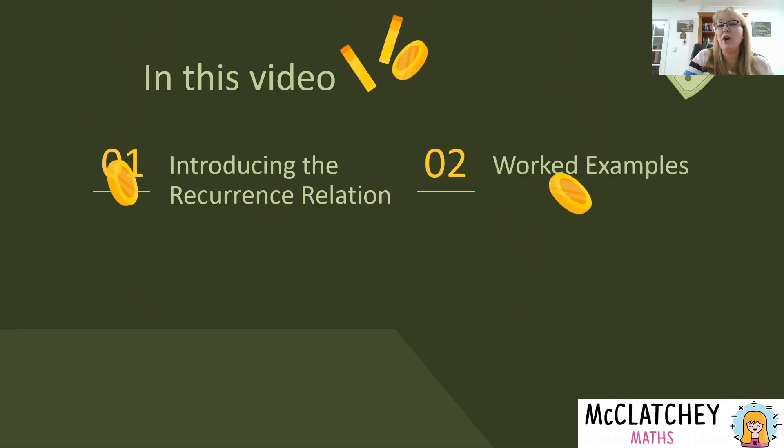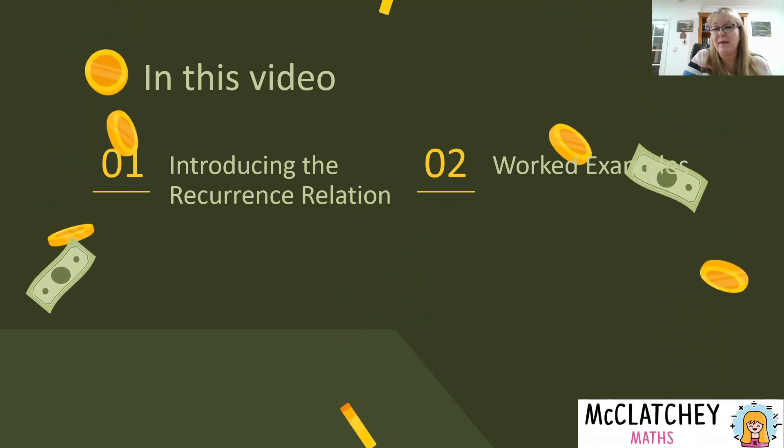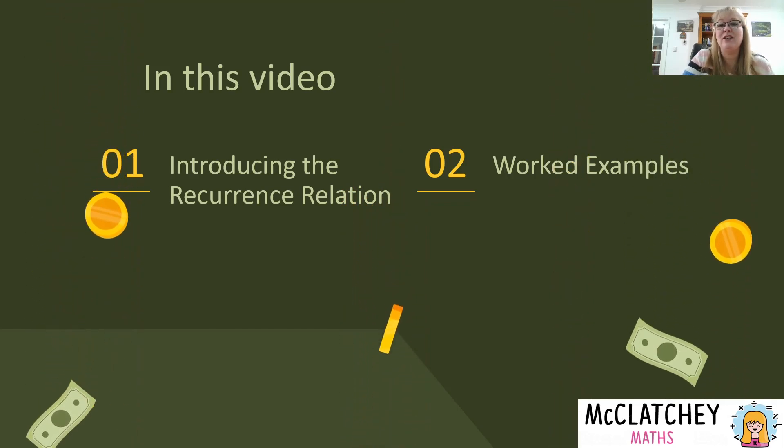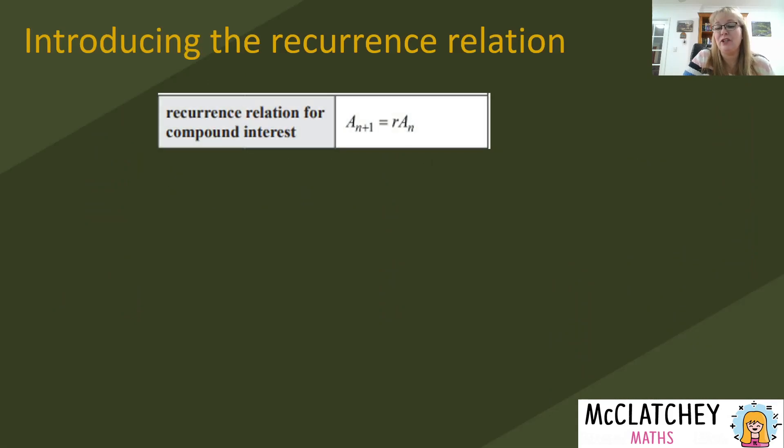In this video I'm going to introduce the recurrence relation for compound interest to you and take you through some worked examples of how to use the relation. So let's get right into it. Here is what the recurrence relation looks like. This is taken straight from the Queensland's QCAA general maths formula sheet and it says that the recurrence relation for compound interest is a subscript n+1 equals r times a subscript n. Now you might be thinking what on earth does that mean? So let's talk about the different variables in the recurrence relation.